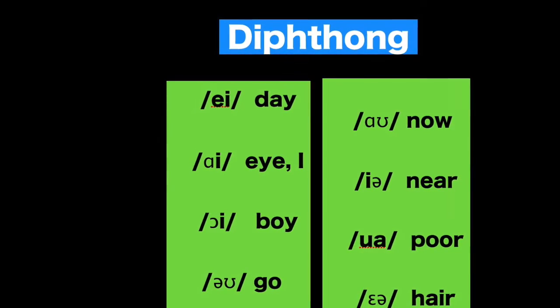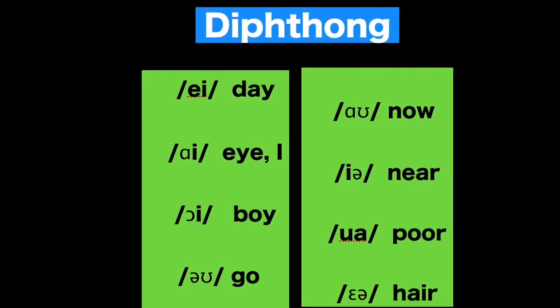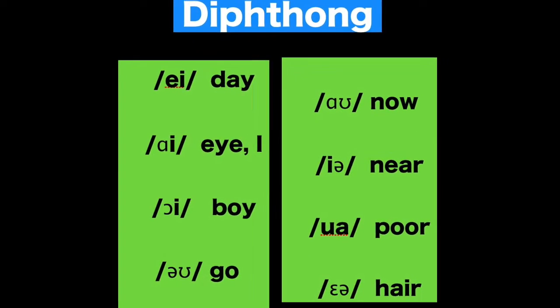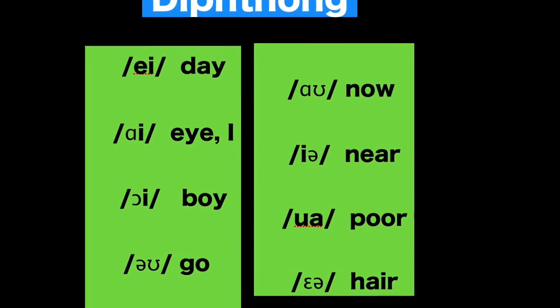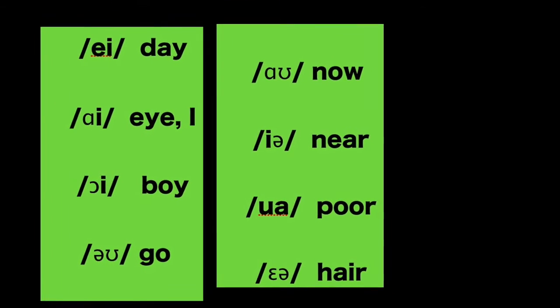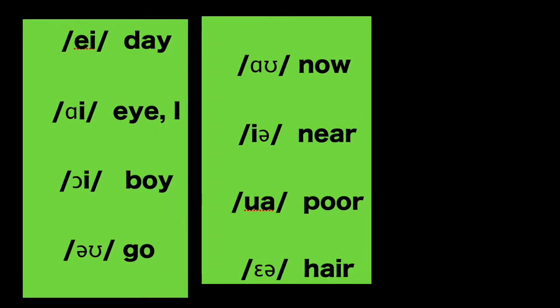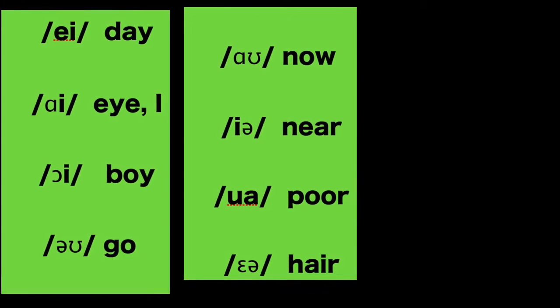Now let's take up the eight diphthongs, which are combinations of two vowel sounds. All eight diphthongs are formed by combining two vowel sounds.